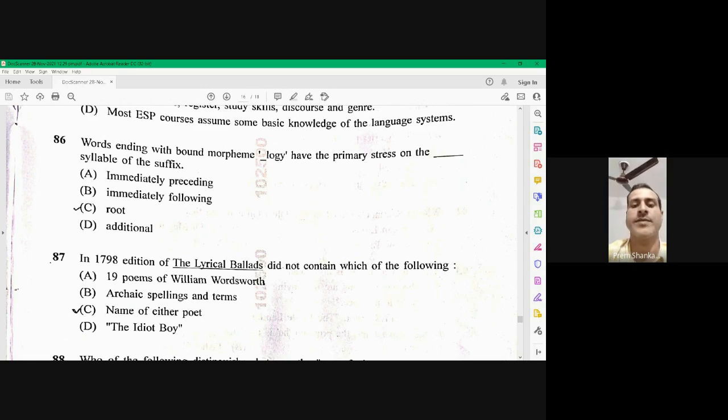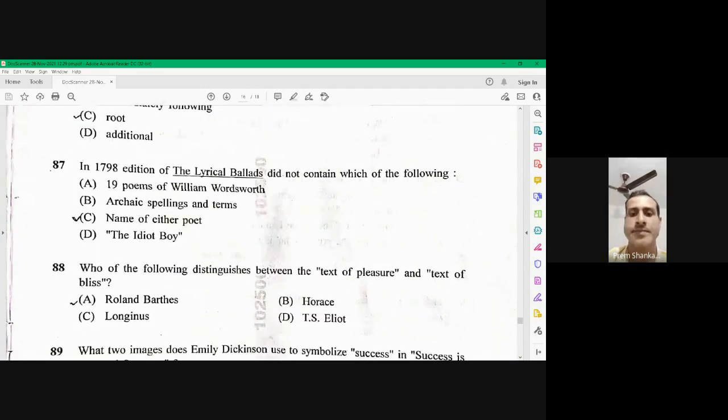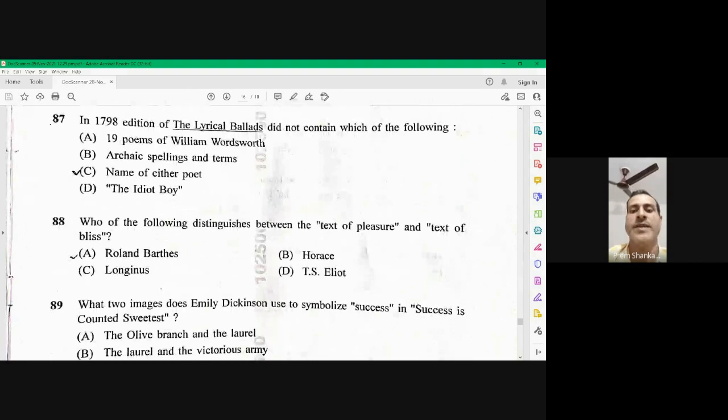Question number 88. Who of the following distinguishes between the text of pleasure and the in the base of the author. Ronald Barthes has distinguished between the text of pleasure and the text of bliss. Ronald Barthes, A is the right option.